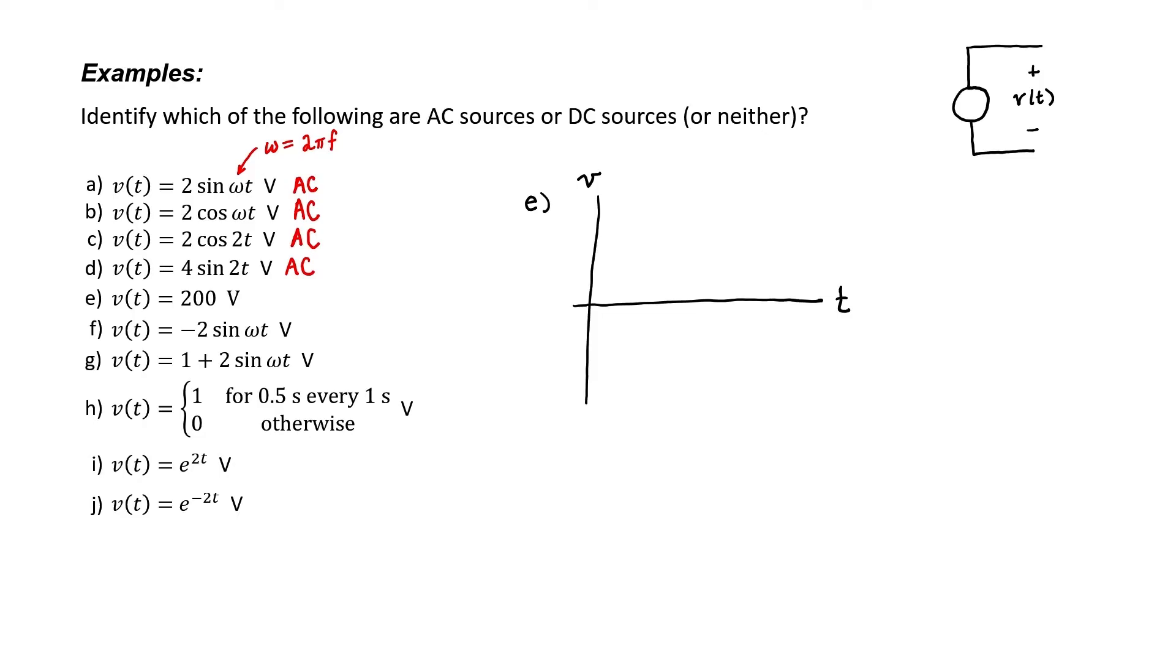Source E doesn't change with respect to time. The voltage is just 200 all the time. There's no period. There's no frequency. This voltage is constant. Therefore this is an example of a DC source.